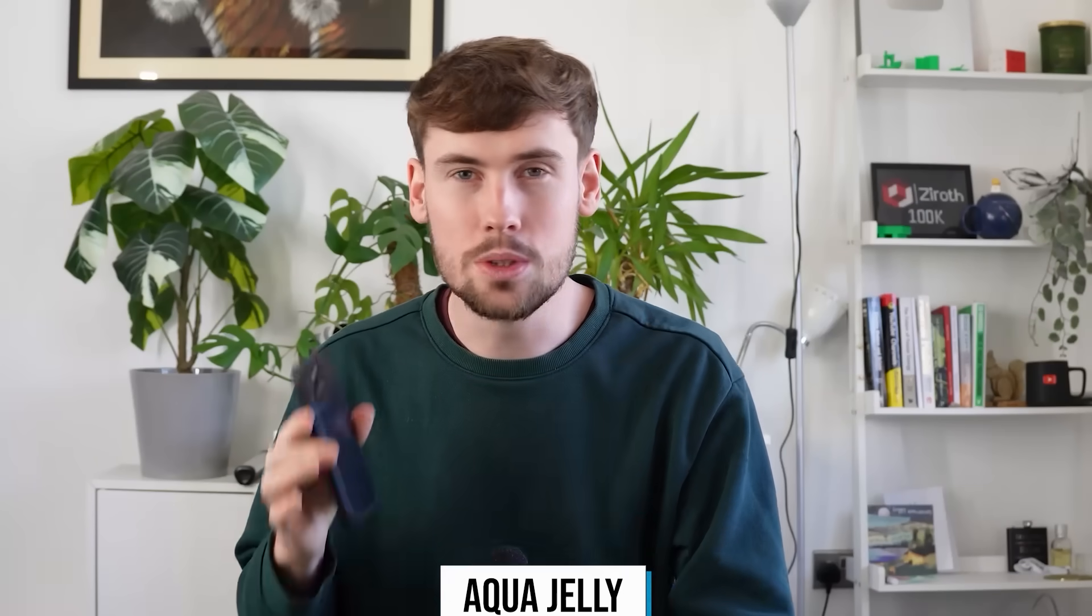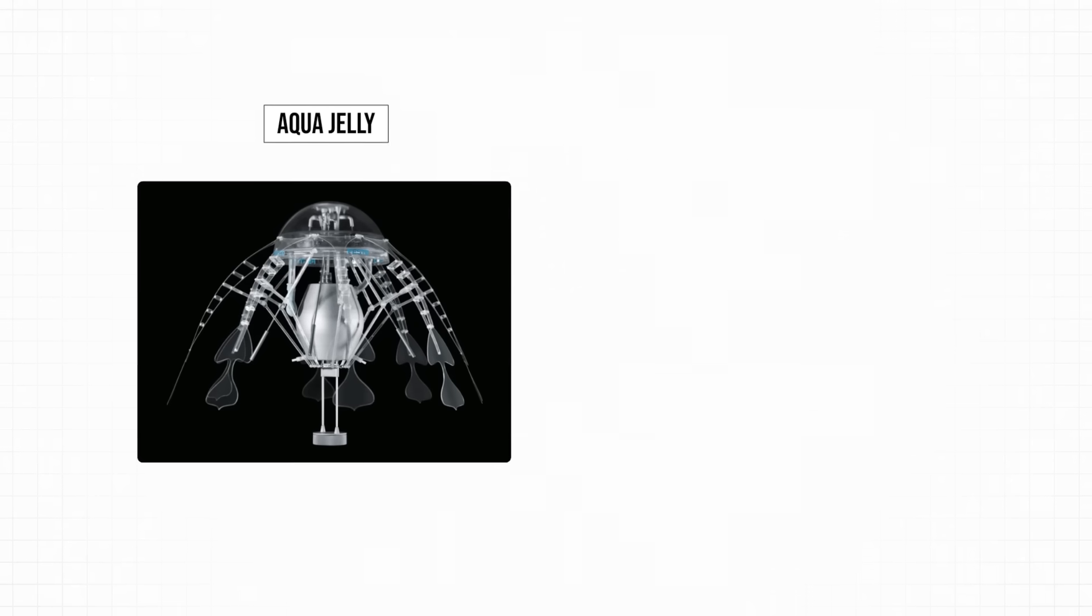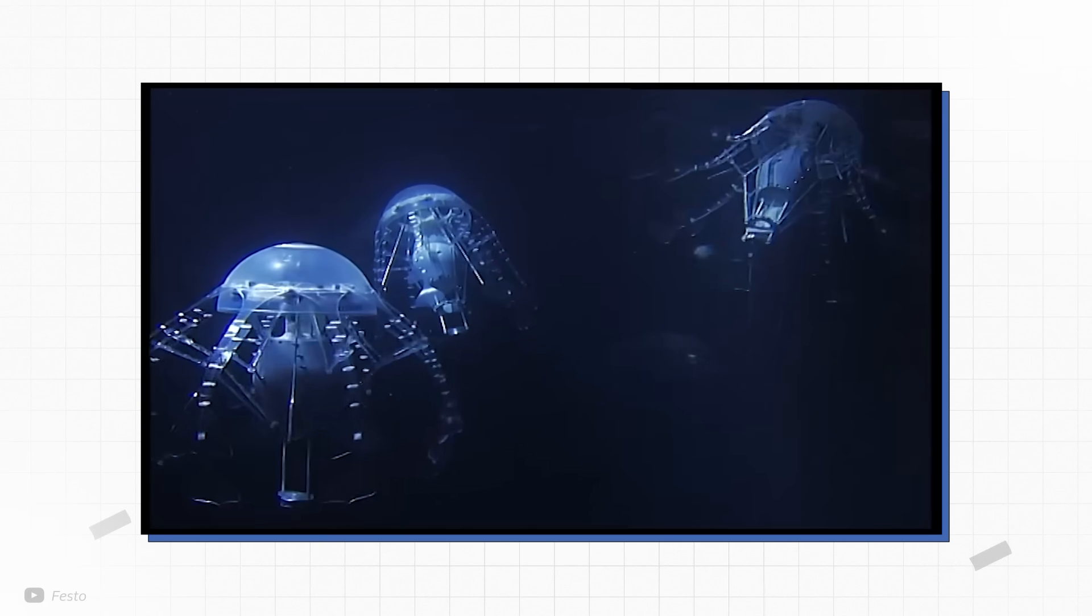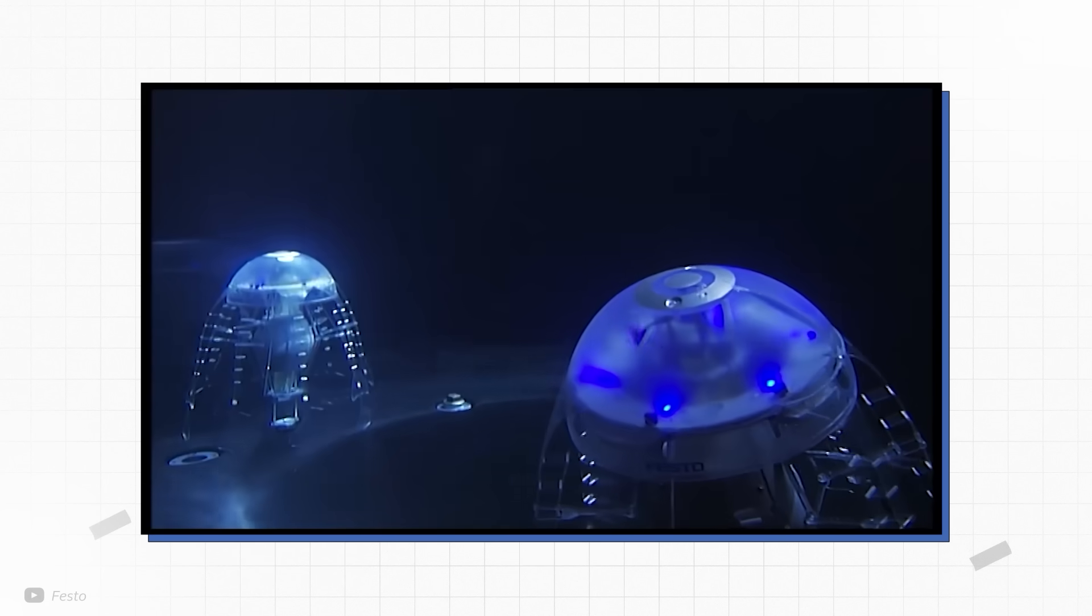Festo's robot is called the AquaJelly, and it's powered by a lithium-ion battery the same size as the one in this iPhone. Each AquaJelly is about the size of a basketball, and is intended to swim in a swarm, presumably so it doesn't get lonely, using infrared sensors to prevent collisions.